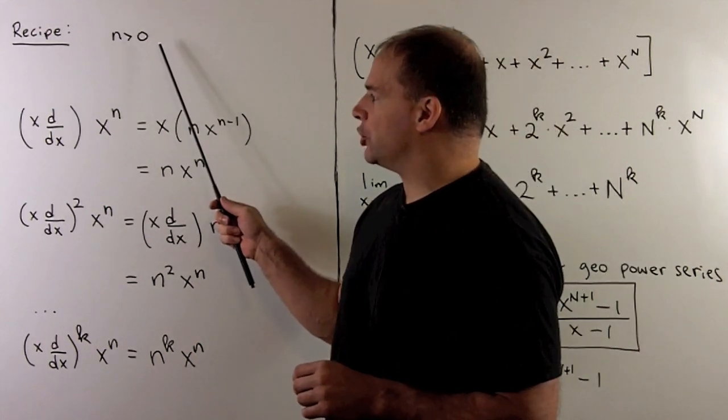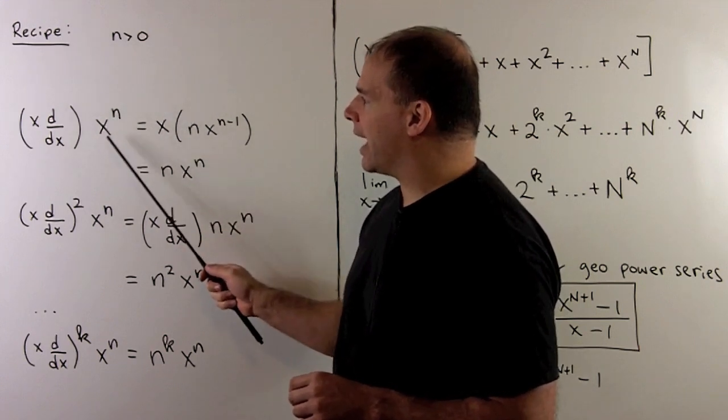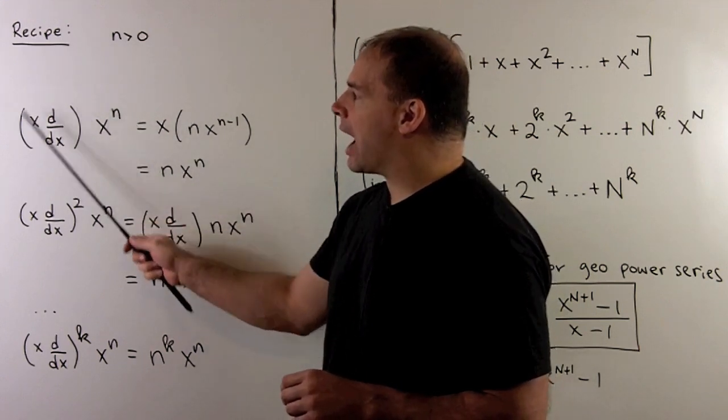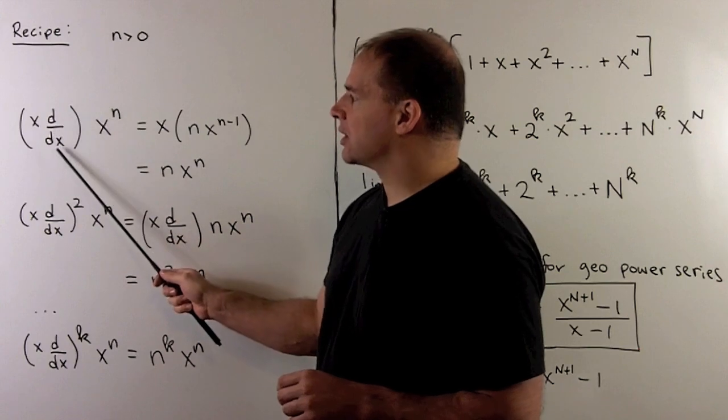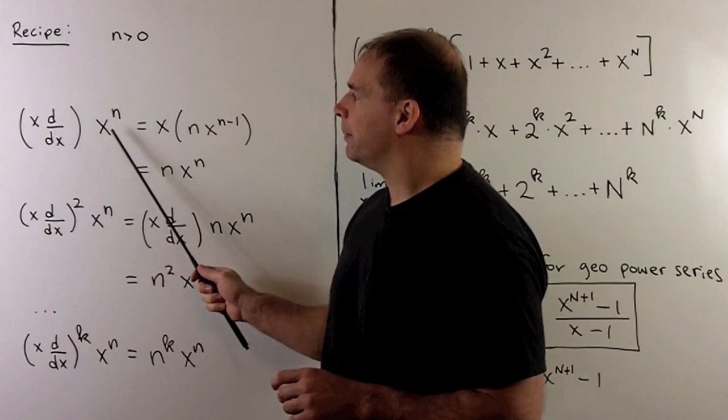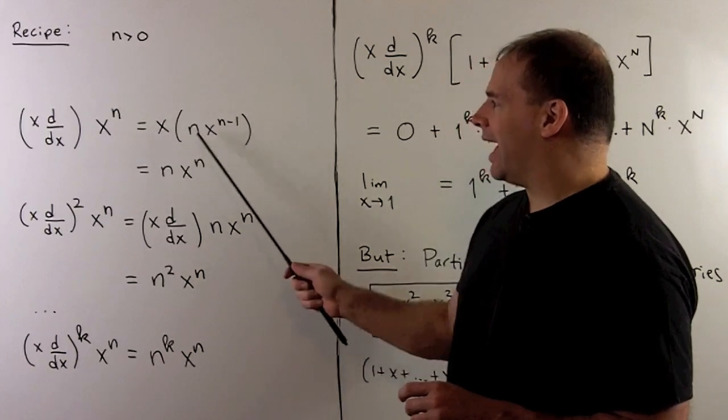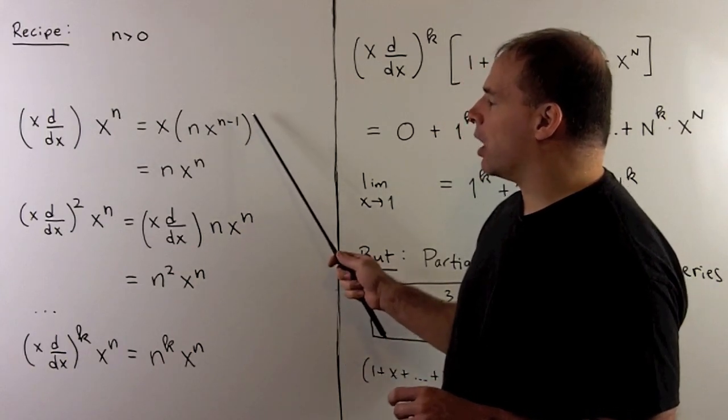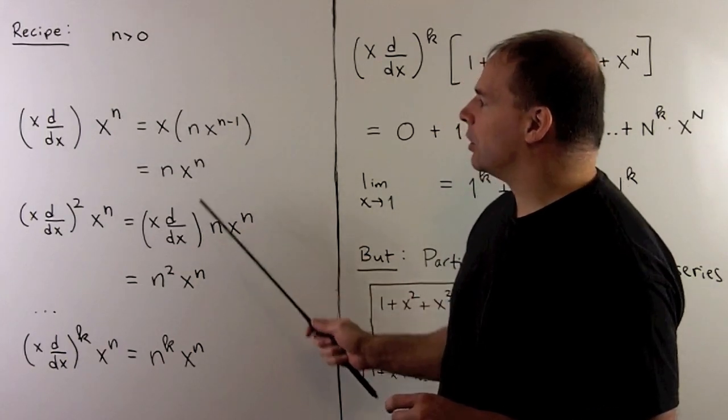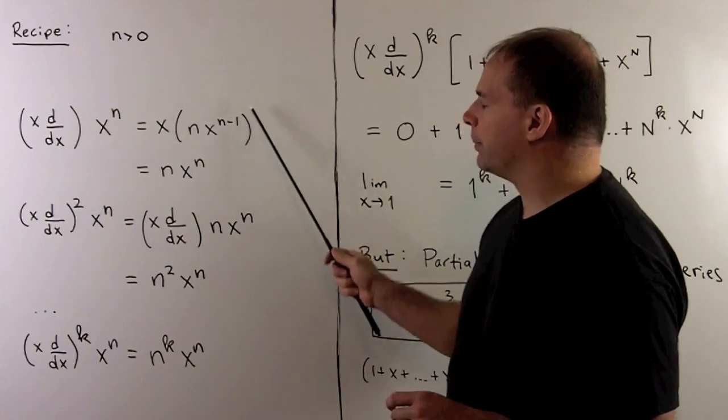Now where do we get our recipe? First we assume n is a positive integer. Consider the monomial x^n. Apply our operator x(d/dx). So first we're going to take the derivative, then multiply by x. Taking the derivative gives me n times x^(n-1). When I multiply by x, we just restore the exponent, so I have nx^n.